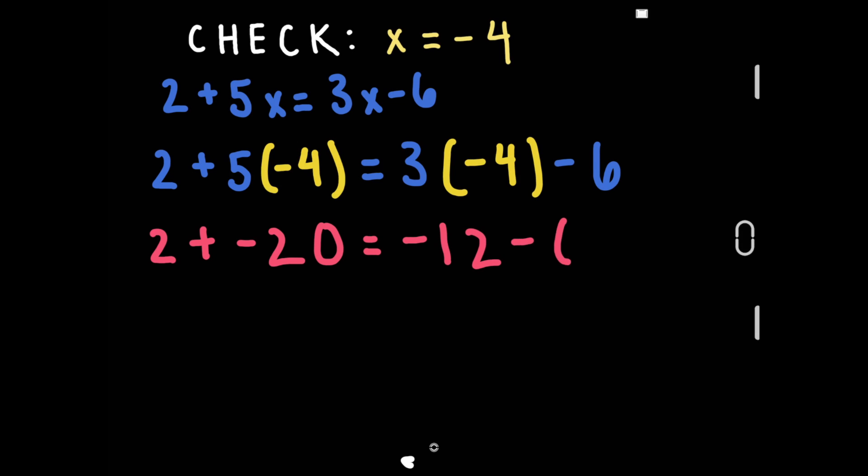From here, solve both sides or simplify. 2 plus negative 20 is negative 18 while negative 12 minus 6 is negative 18. Both sides match so this is the right answer.